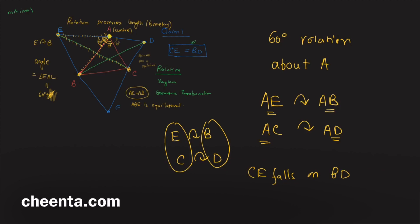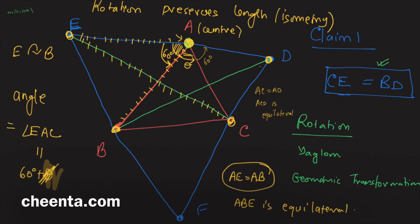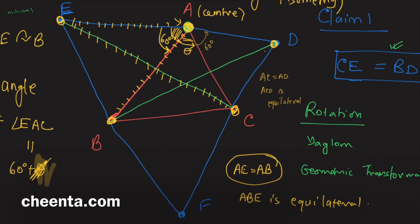Exactly the same argument will work if you want to show that AF is equal to CE. That is the next thing you can show, and it follows from the same rotation argument.